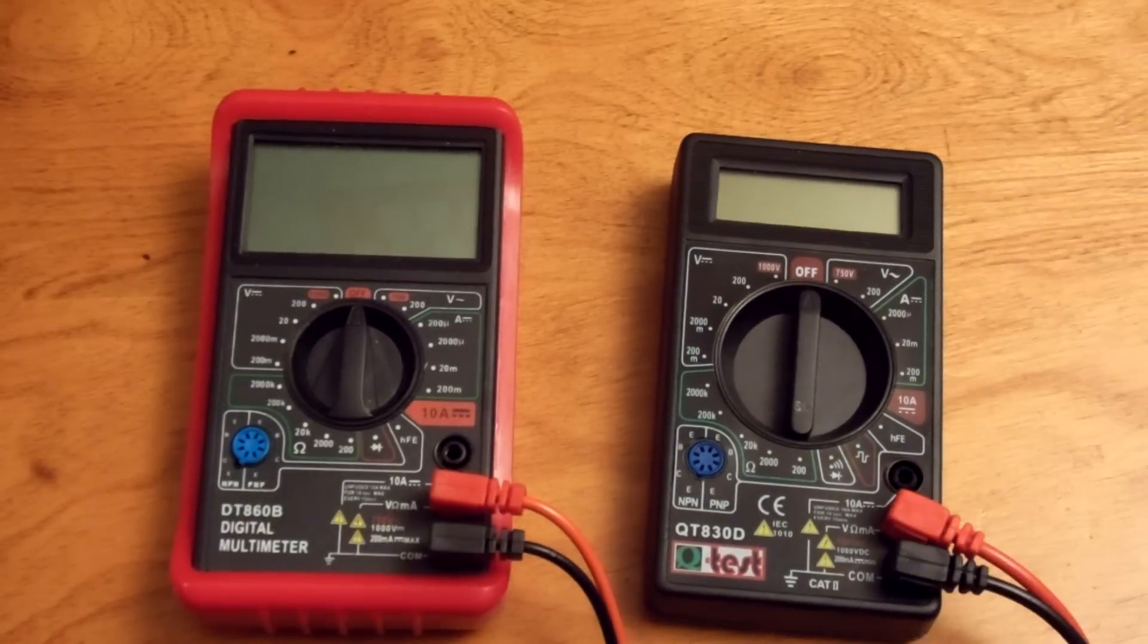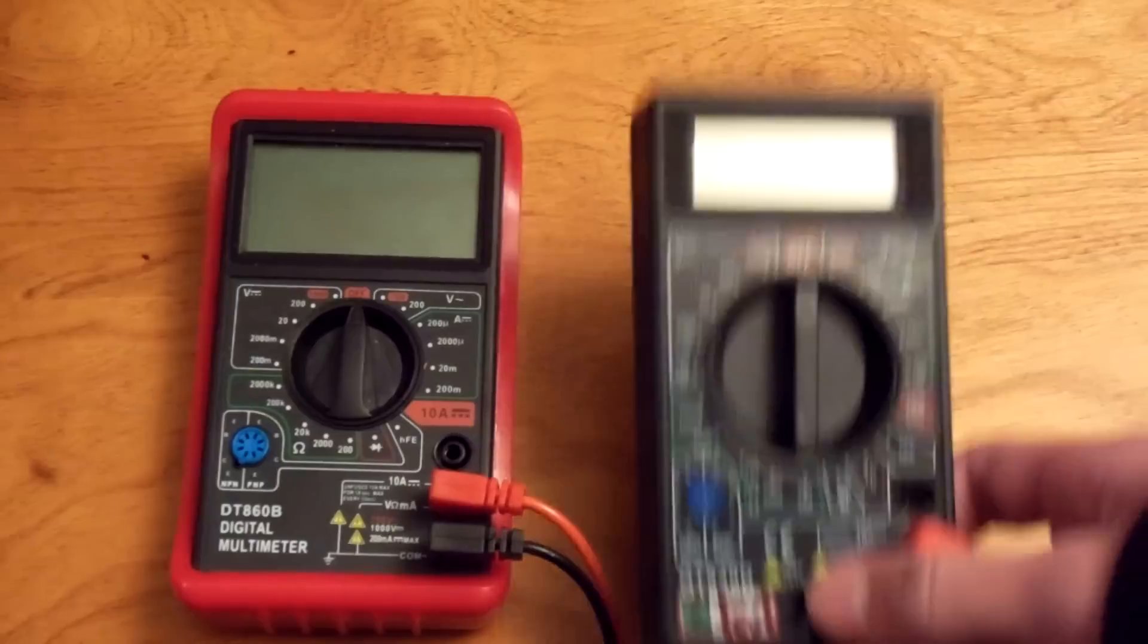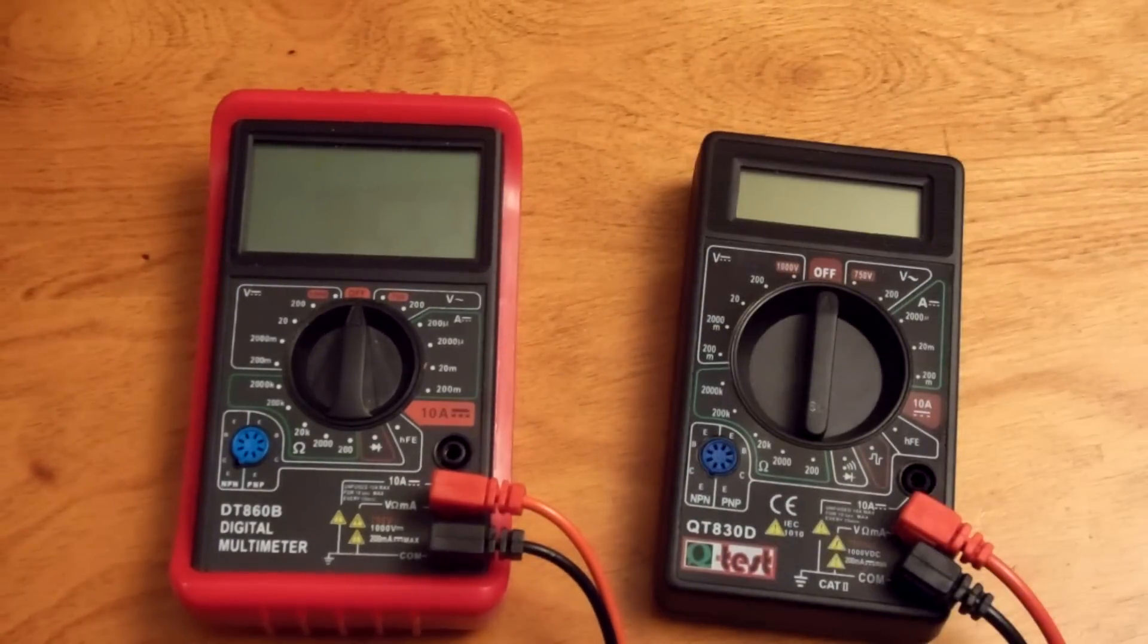Cheap multimeters can be found almost anywhere for less than $10, and some places even give them away, such as Harbor Freight. So you may be wondering, are these any good? Or if you already have one, can I make it more accurate?